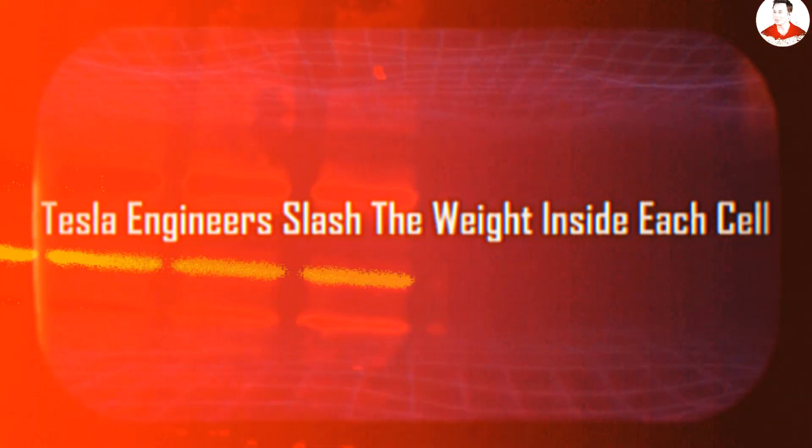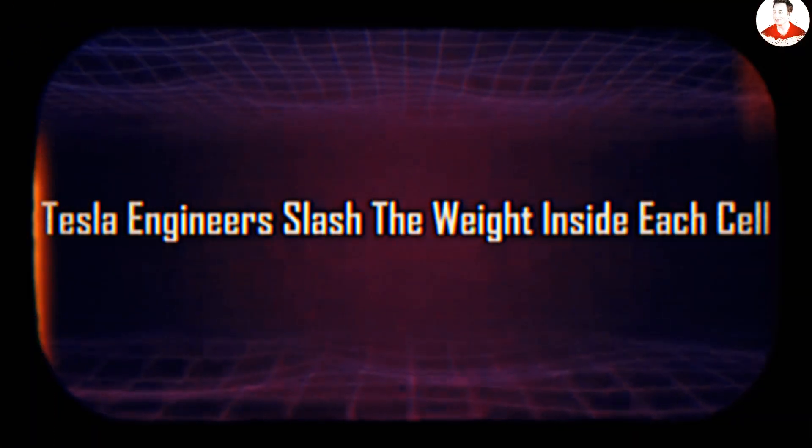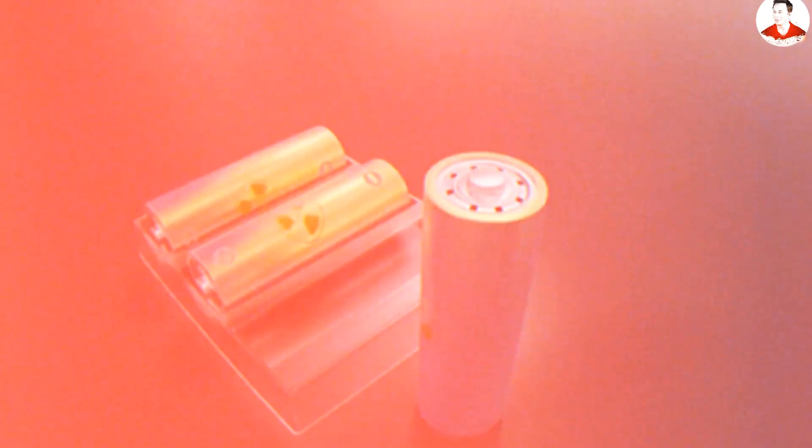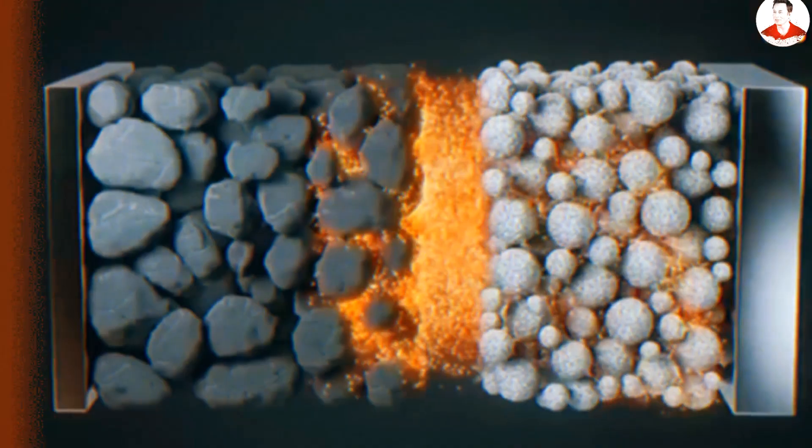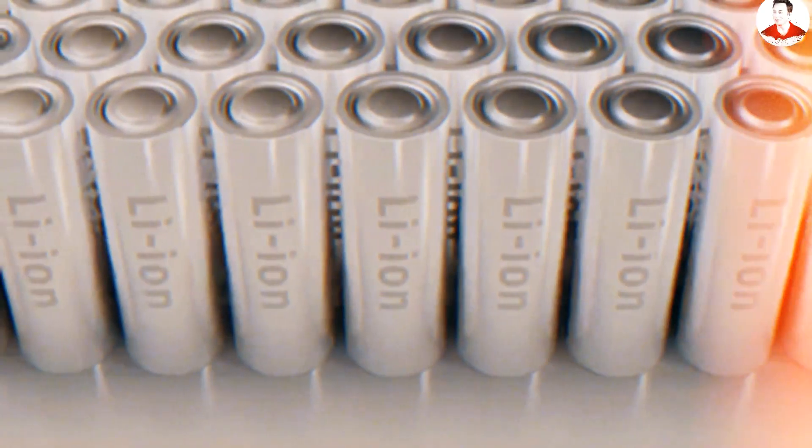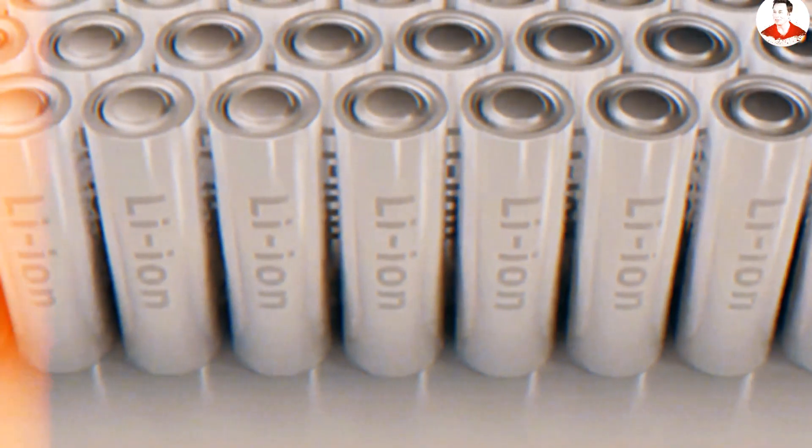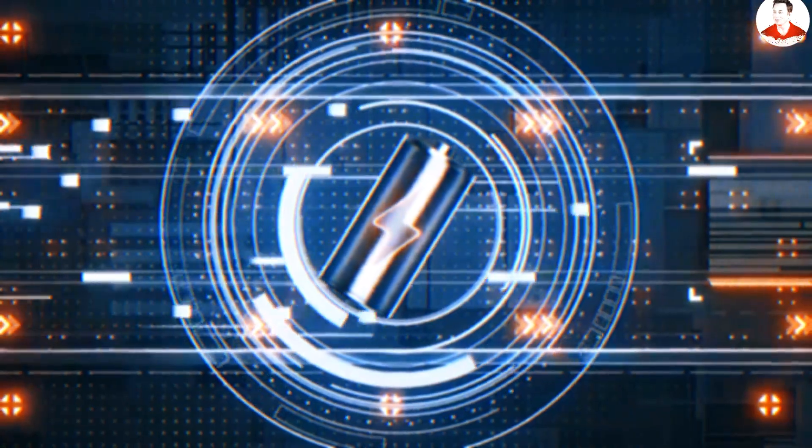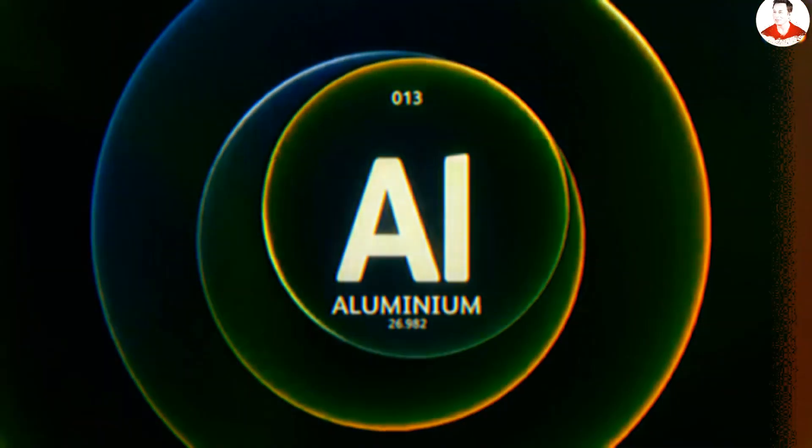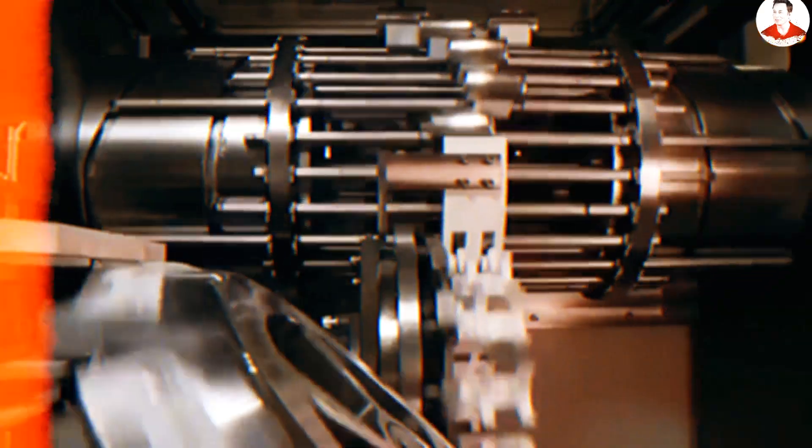How did Tesla engineers slash the weight inside each cell? Inside Tesla's secret labs, engineers have gone after every single gram hiding inside the battery cell itself. And what they have done is nothing short of bold. While traditional lithium-ion batteries have served us well, they're reaching their physical limits. Tesla's engineers have turned to aluminum to create a battery system that's not just lighter, but dramatically more efficient and cost-effective.